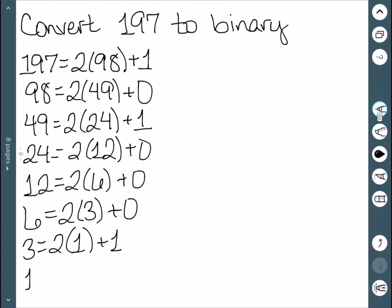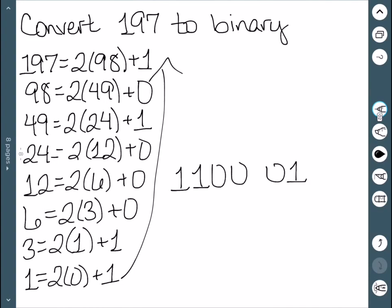And then finally, 1 divided by 2 is 0 with a remainder of 1. And then we work our way back up. So this is 1, 1, 0, 0, 0, 1, 0, 1, base 2.